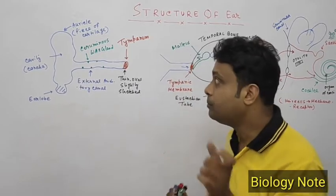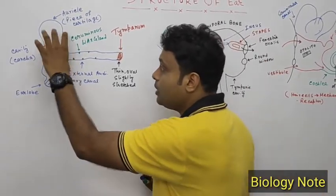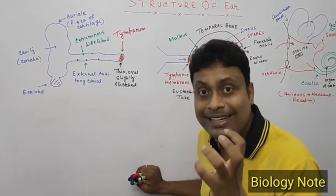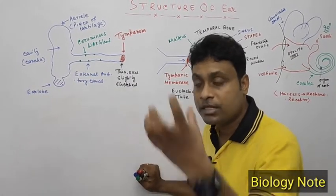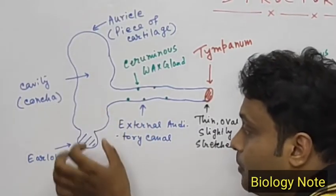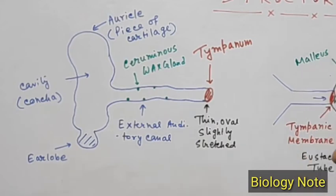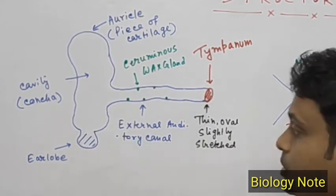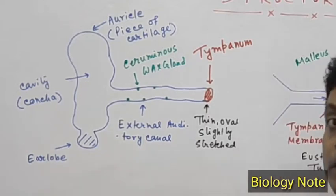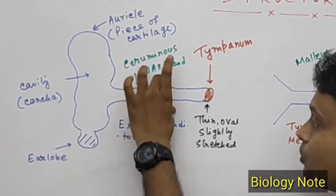The auricle is made up of a piece of cartilage covered by skin. The cavity of the auricle is known as the concha, and the concha receives sound waves from the surrounding environment. Just beneath the auricle there is a flap of skin known as the earlobe.